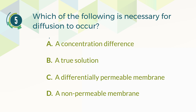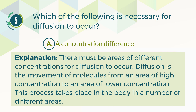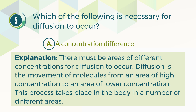The correct answer is A. A concentration difference. Explanation: There must be areas of different concentrations for diffusion to occur. Diffusion is the movement of molecules from an area of high concentration to an area of lower concentration. This process takes place in the body in a number of different areas.